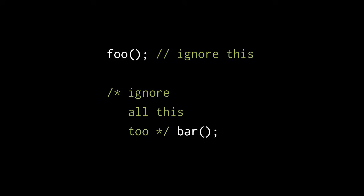Note that with a multiline comment, text after the ending asterisk slash is considered part of the code, even if it's on the same line as the comment. Here, the call to bar is code, not part of the comment.